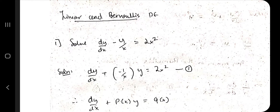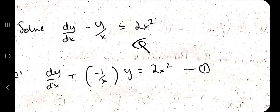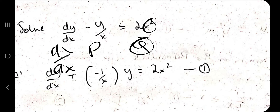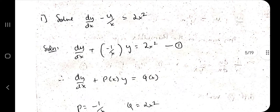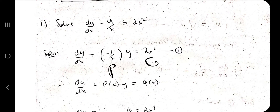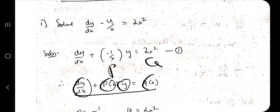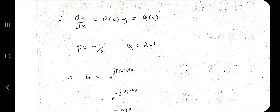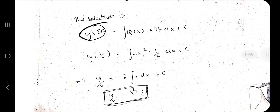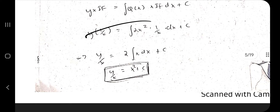Moving on to linear and Bernoulli's differential equations. For a linear equation, observe carefully: this is Q and this is P, and it is dy/dx. If only x appears in P and Q it is linear; if y also appears it becomes Bernoulli's. The linear form is dy/dx + P(x)·y = Q(x). Take the values of P and Q, find the integrating factor, and the solution is y·IF = ∫Q(x)·IF dx. Substitute values and integrate to get the final answer.